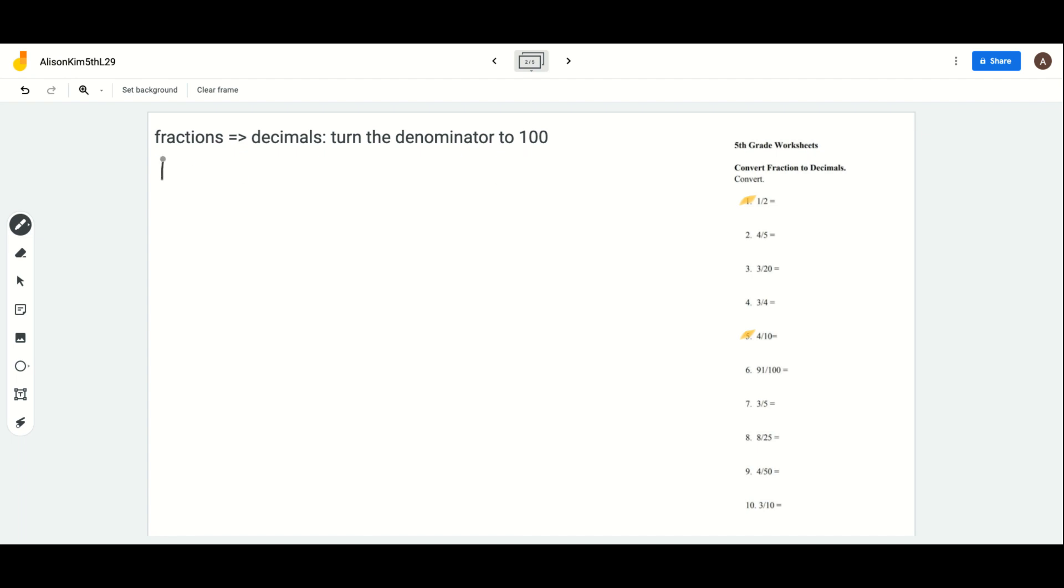We're going to start off with number one. Number one gave us 1/2. I'm going to turn it into a decimal, and the only way we know how to do is by turning the denominator into 100. When we divide 2 into 100, we know that 50 times 2 equals 100. So if we multiply the denominator by 50, we also have to multiply the numerator by 50, and 50 times 1 is just 50. Once it's over 100, we're going to turn it into a decimal. As you know, the hundredths place is just one decimal place, so we're going to put 0.5.